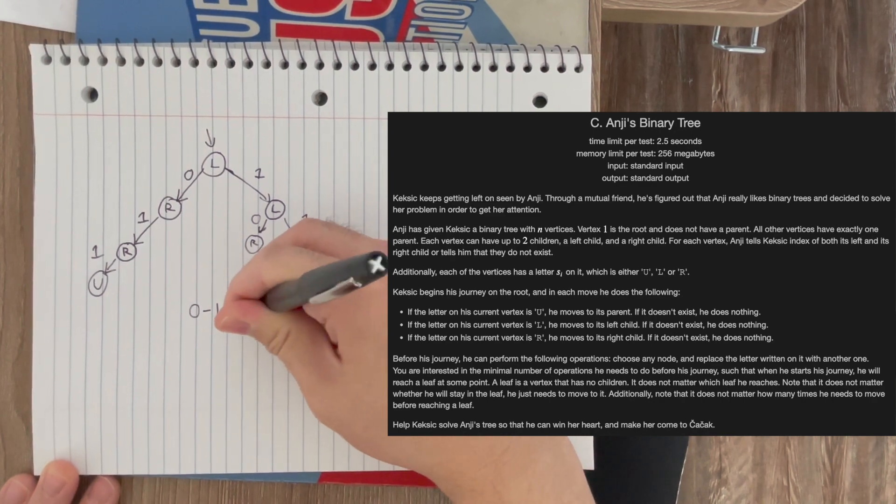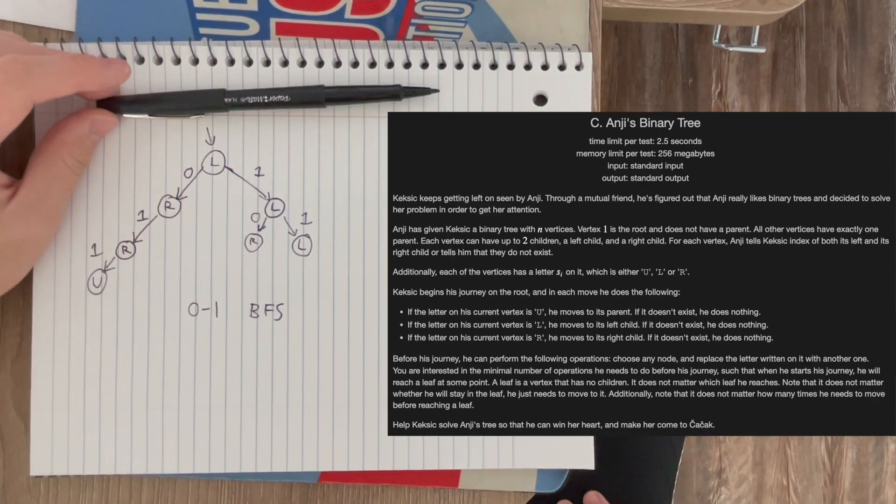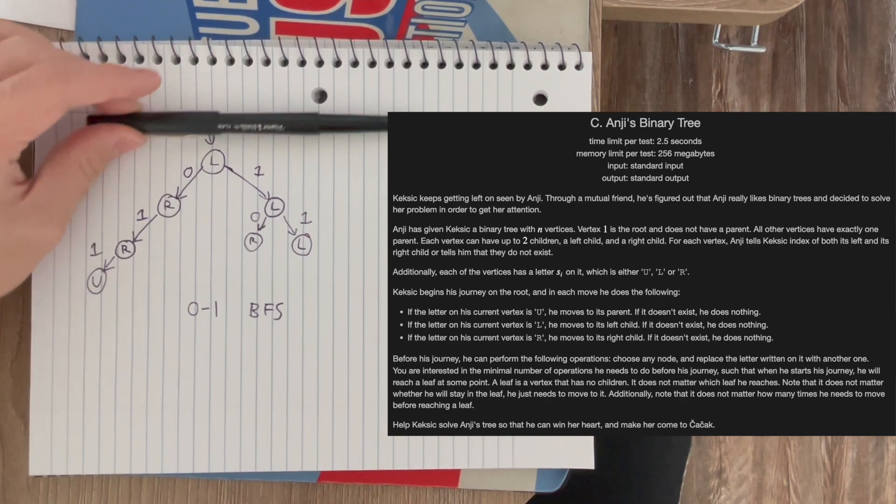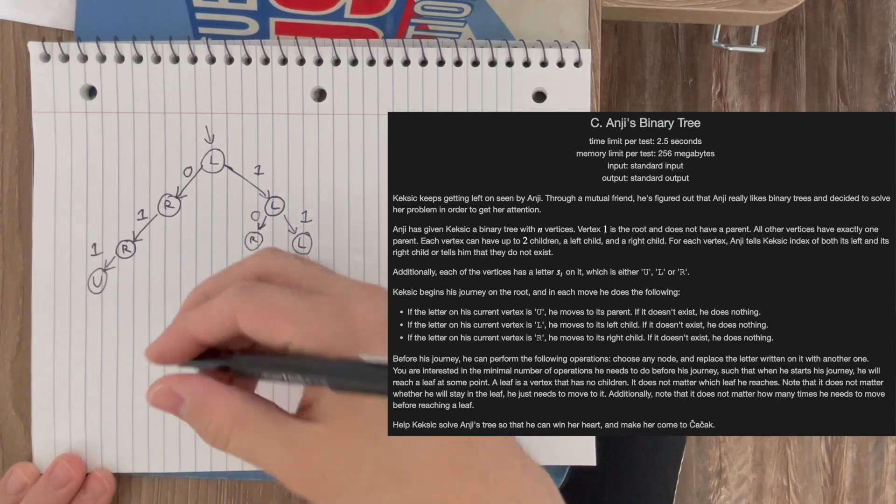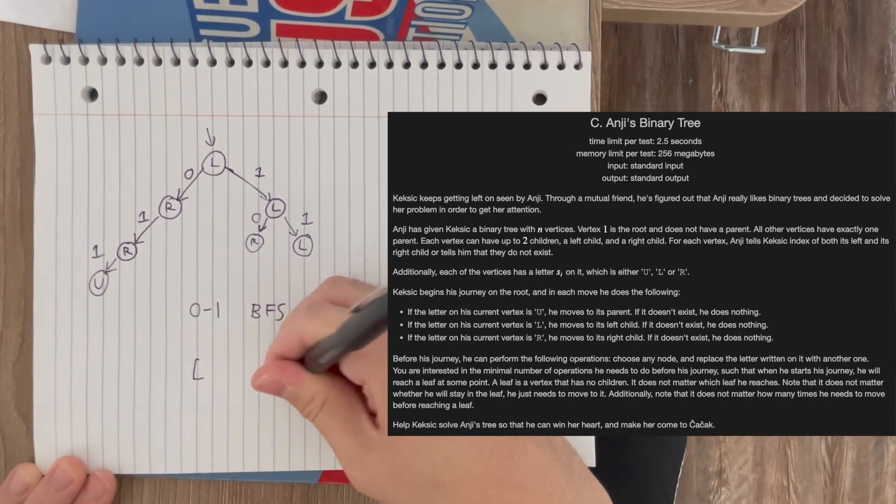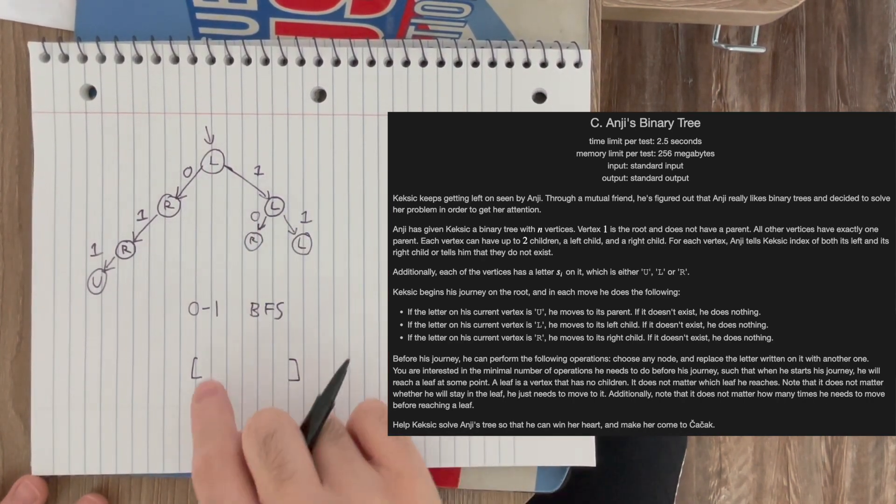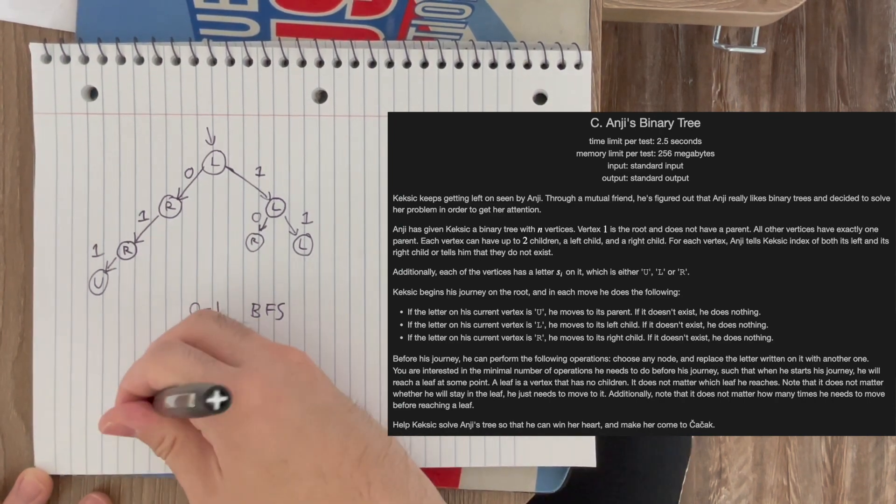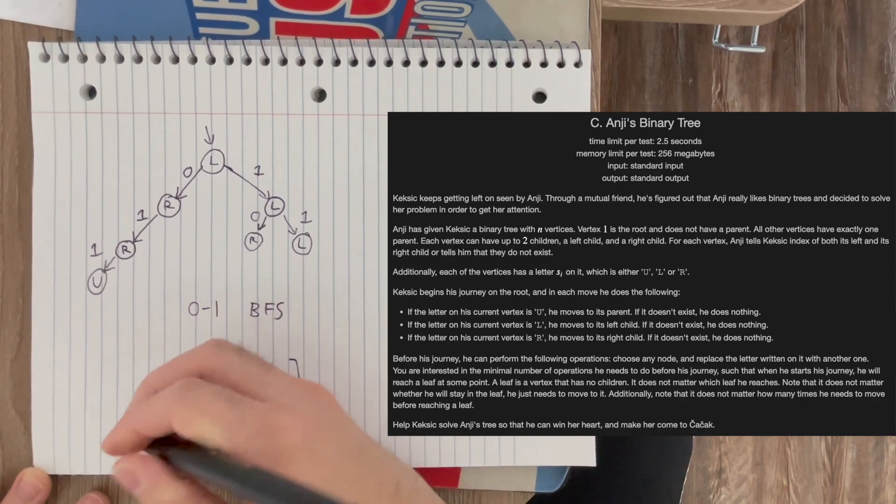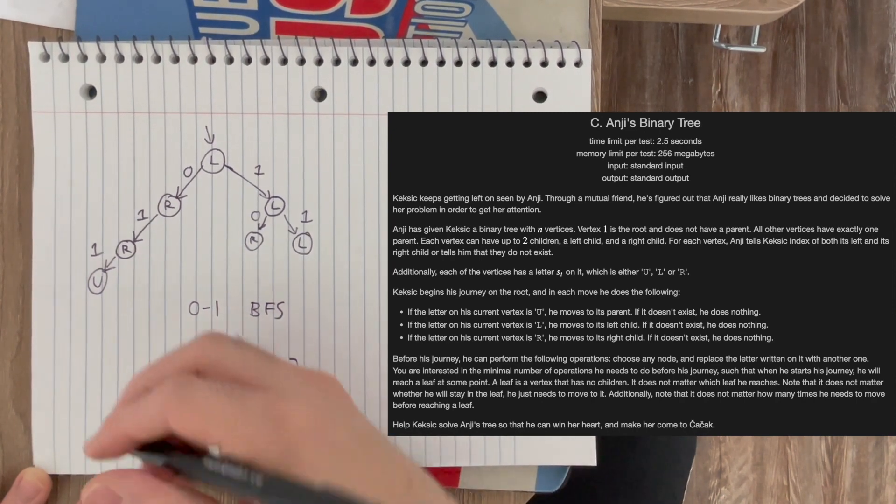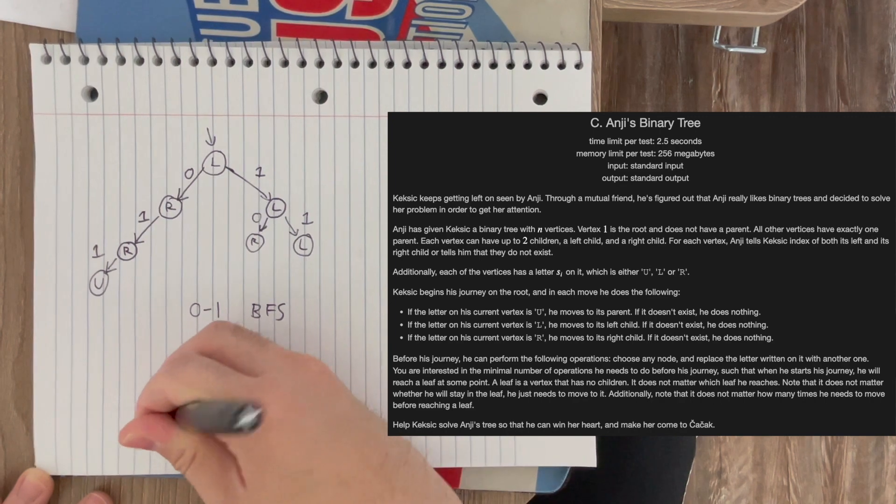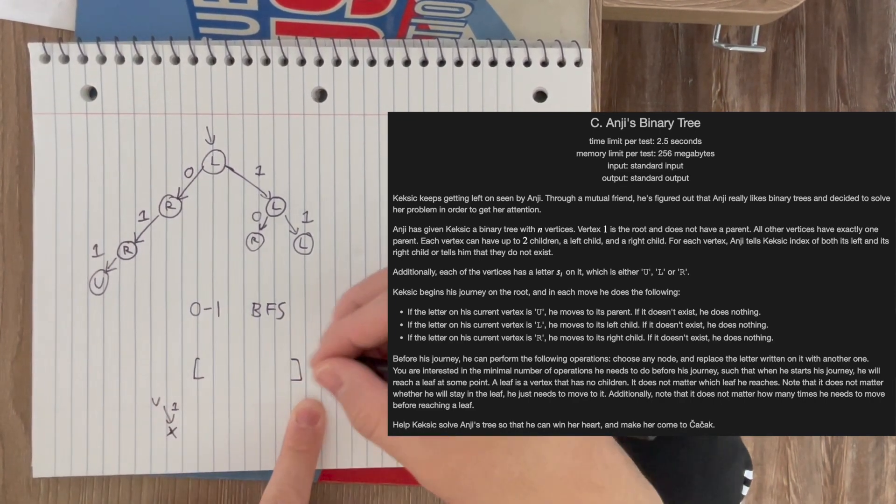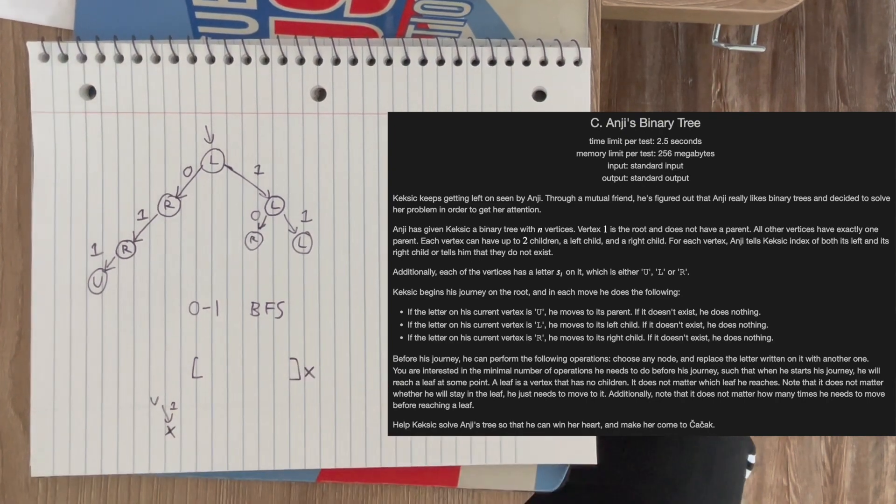And what a 0-1 BFS is, is that you just take a normal BFS, but instead of using a queue, you use a deque. And the idea is that if this is your deque and we were currently processing some node V, then if V has an edge to another node, let's say X, of weight 1, and X hasn't been visited yet, then we can put X at the end of the queue like normal. And this is just normal BFS logic.